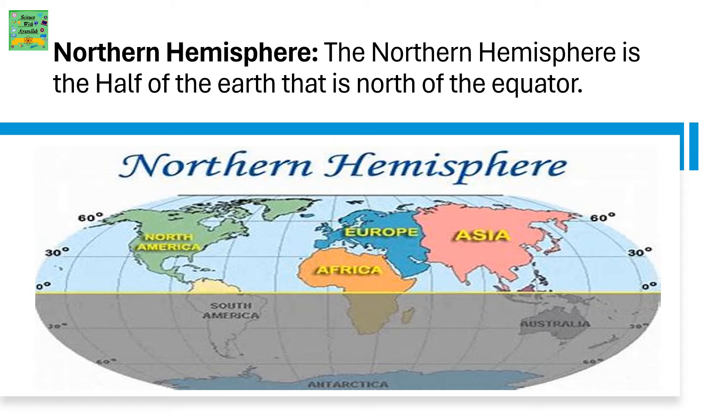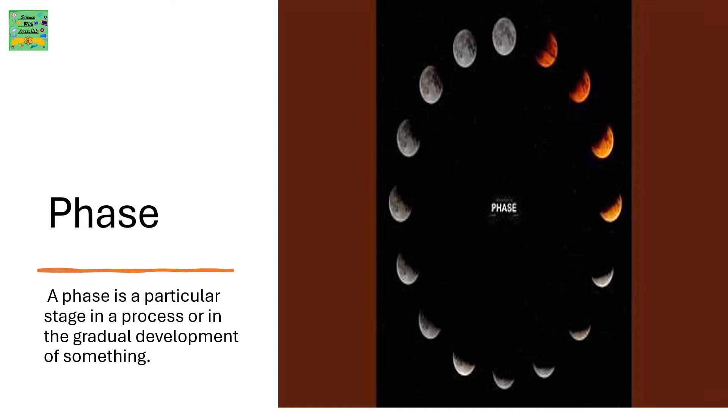Northern Hemisphere: The Northern Hemisphere is the half of the Earth that is north of the equator. Phase: A phase is a particular stage in a process or in the gradual development of something.